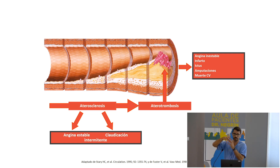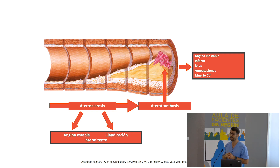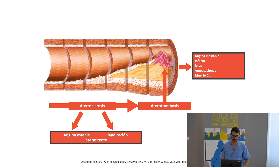Ese trombo, sin quererlo, tapona la arteria y entonces, dependiendo de dónde esté esa arteria, deja sin sangre al órgano determinado y provoca un infarto cerebral, una isquemia en una pierna que acabe uno teniendo que cortársela, o en el corazón un infarto de miocardio.